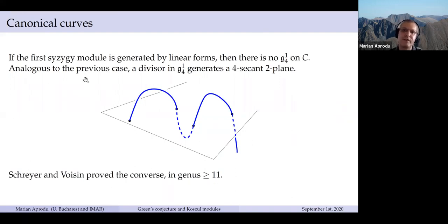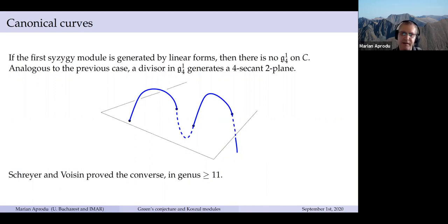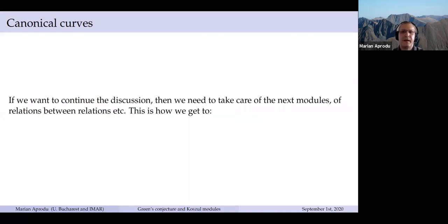If the first syzygy module is generated by linear forms, then there is no g^1_4. Schreyer and Voisin proved the converse independently in the nineties. Now if we want to take care of g^1_5 and so on, we need to look further in the syzygies.